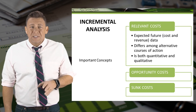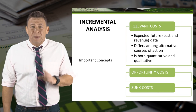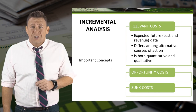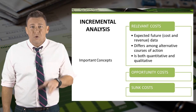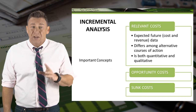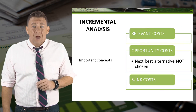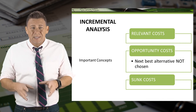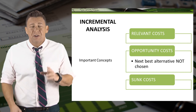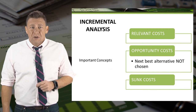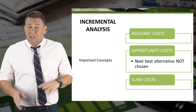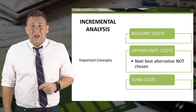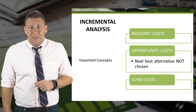Relevant costs are expected future data that differ among alternatives. They can be both quantitative and qualitative. Opportunity cost is the cost of the next best alternative not chosen. For example, if we choose Alternative A, we do so at the expense of choosing Alternative B.